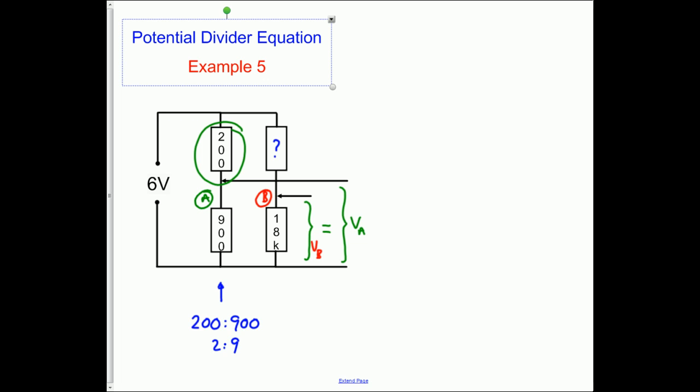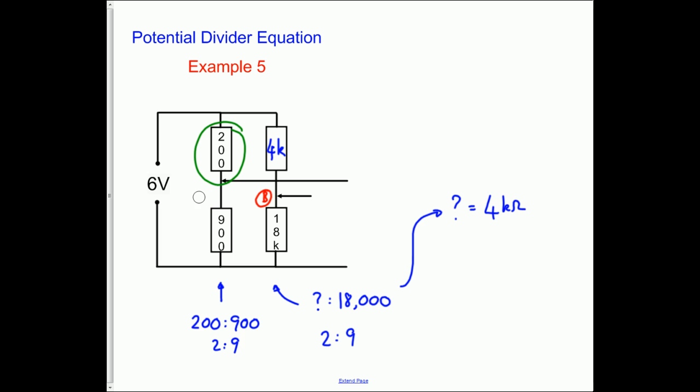And to get the same voltage, you've got to be in the same ratio. So for this one here, what we're going to find is that question mark to 18,000 is our ratio. But because they're going to be the same, that's got to be also 2 to 9. So now it's just a case of doing the math. So 18,000 is to 9 as 4,000 is to 2. So therefore, the question mark must be 4 kilo ohms. If I take a 4 kilo ohm resistor and I put it in here, and I work out some values, then we should find that the two voltages now come out to be the same.